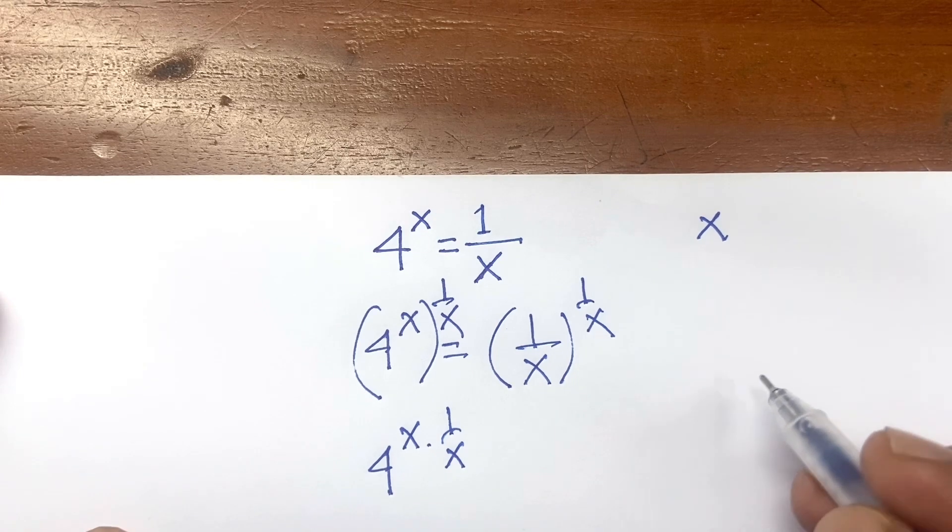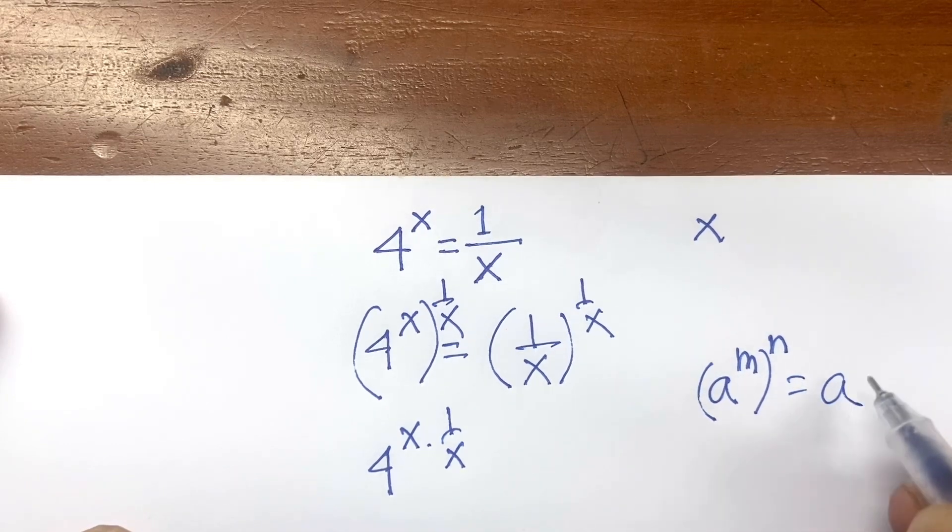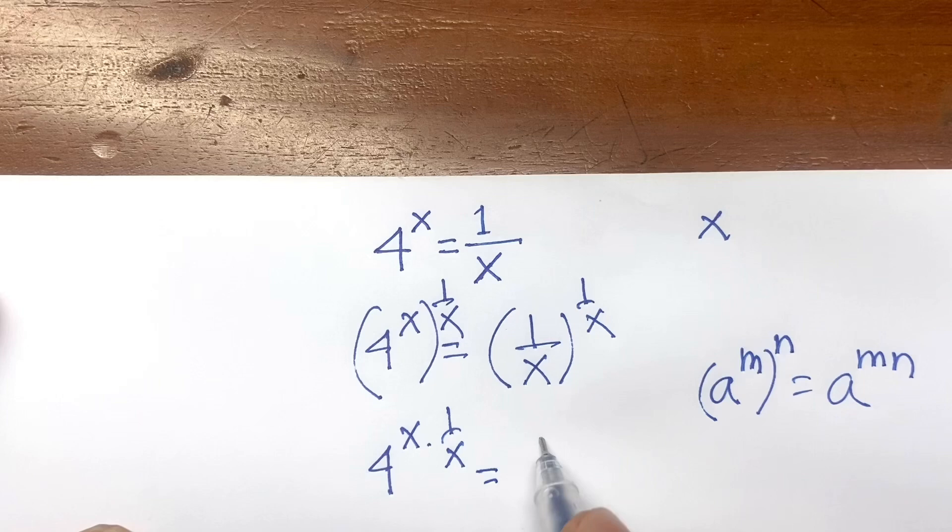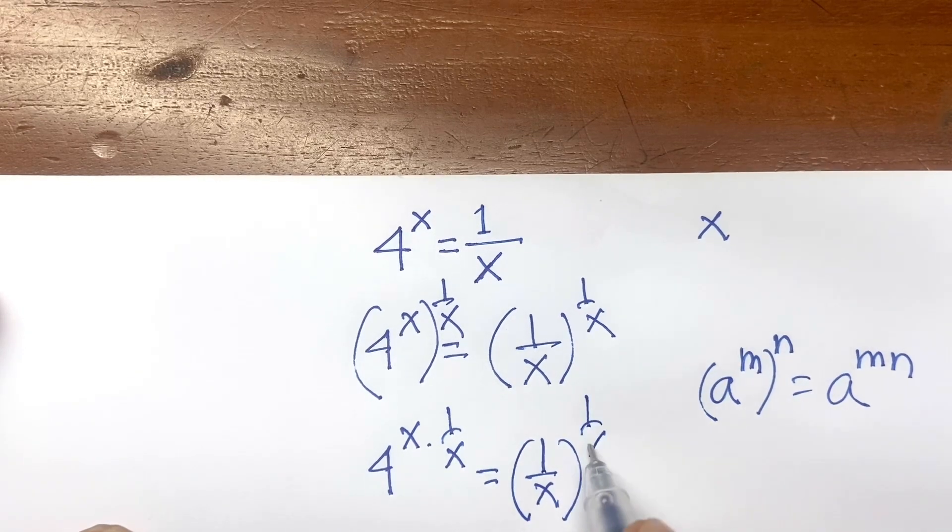According to this formula, we know that a to the power m bracket n is equal to a to the power m n, and here is x times 1 over x, bracket power is 1 over x.